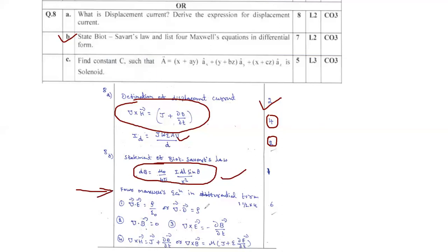The four Maxwell equations are: first, ∇·E = ρ/ε (or ∇·E = ρ); second, ∇·B = 0; third, ∇×E = −∂B/∂t; and fourth, ∇×H = J + ∂D/∂t. These are the popular Maxwell equations, and by using them you can also modify the Biot-Savart law. Try to remember these equations — they are important.